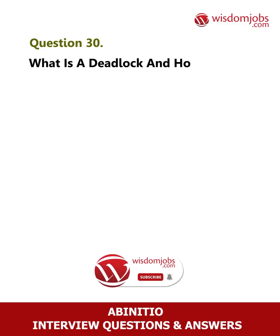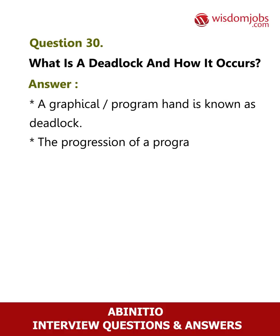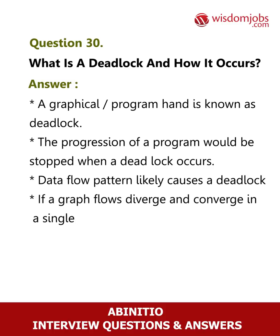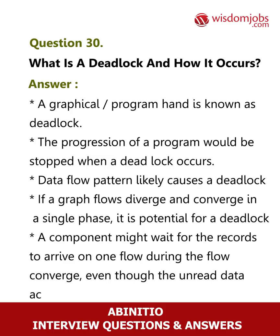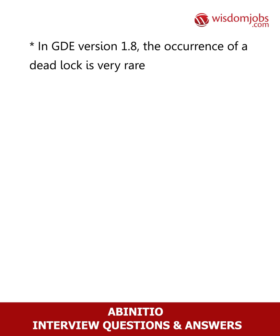Question 30: What is a deadlock and how does it occur? Answer: A graphical program hang is known as a deadlock. The progression of a program stops when a deadlock occurs. Data flow patterns are a likely cause. If a graph's flows diverge and converge in a single phase, there is potential for a deadlock. A component might wait for records to arrive on one flow during flow convergence, even though unread data accumulates on others. In GDE version 1.8, the occurrence of a deadlock is very rare.